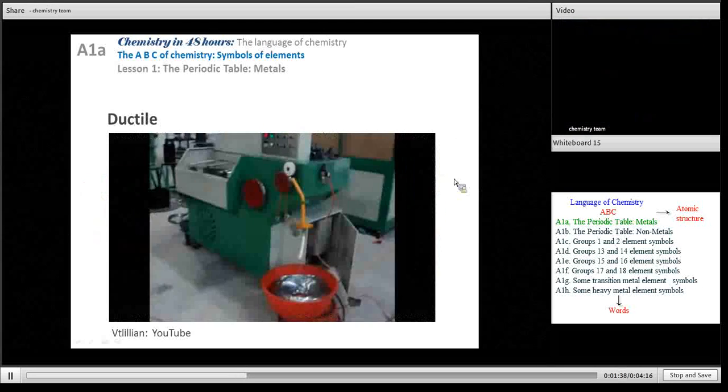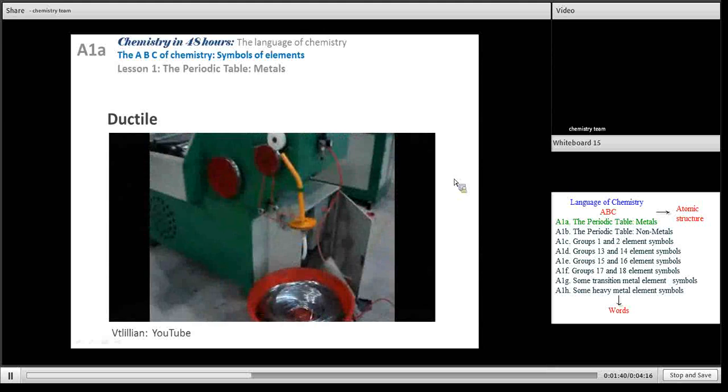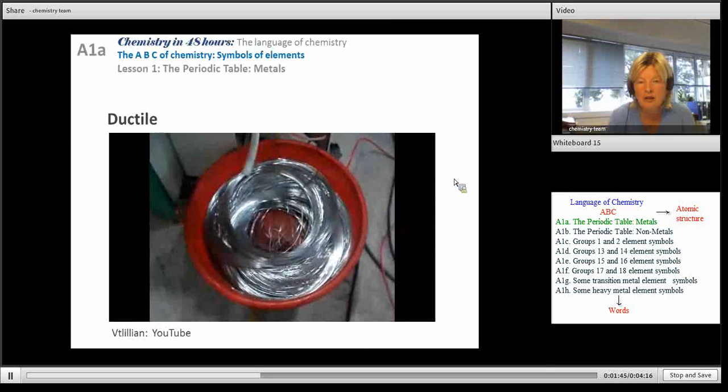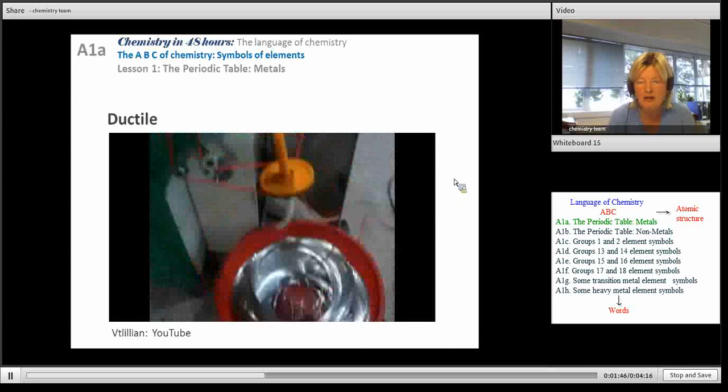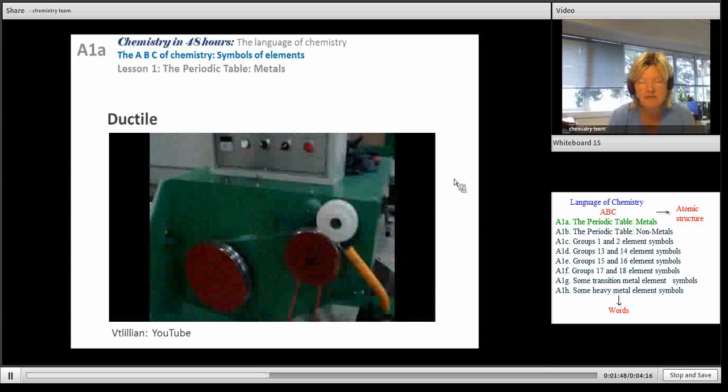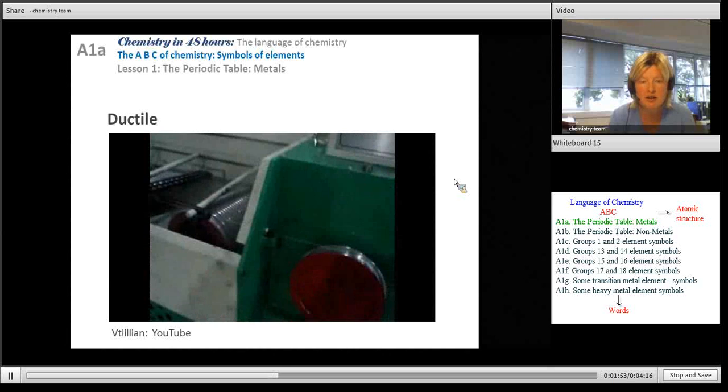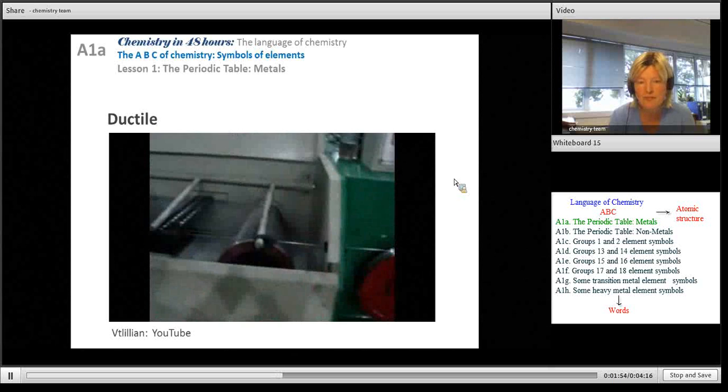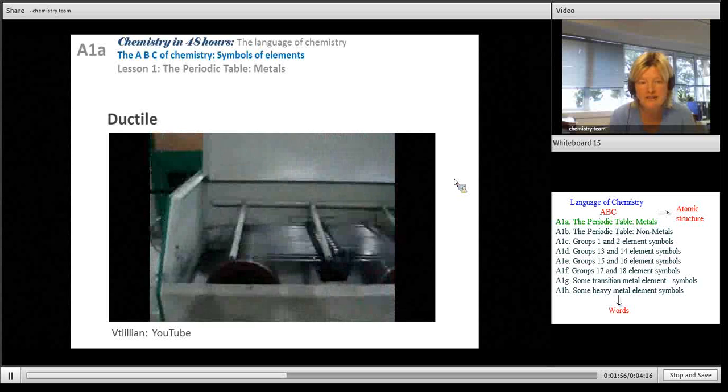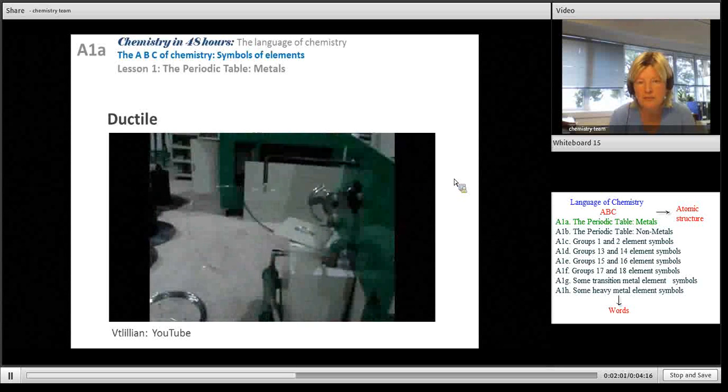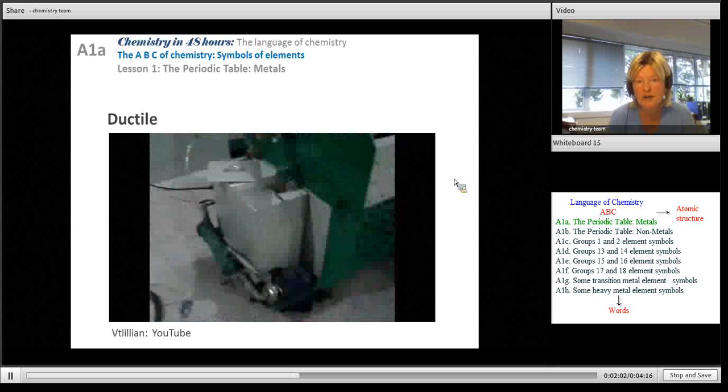Here we can see the ductility of metals. You can see it's being made into a wire. As we have a quick look you'll see that this machine changes a thicker wire to a thinner wire. And you'll see on this side there is the thinner wire coming through. There's a thicker wire going to be made into a thinner wire.